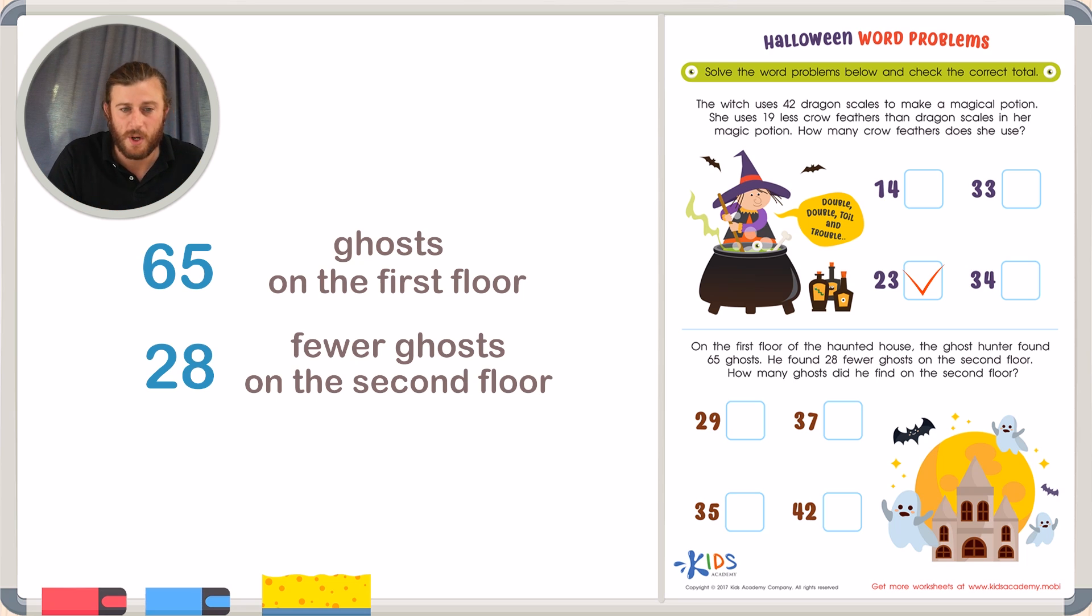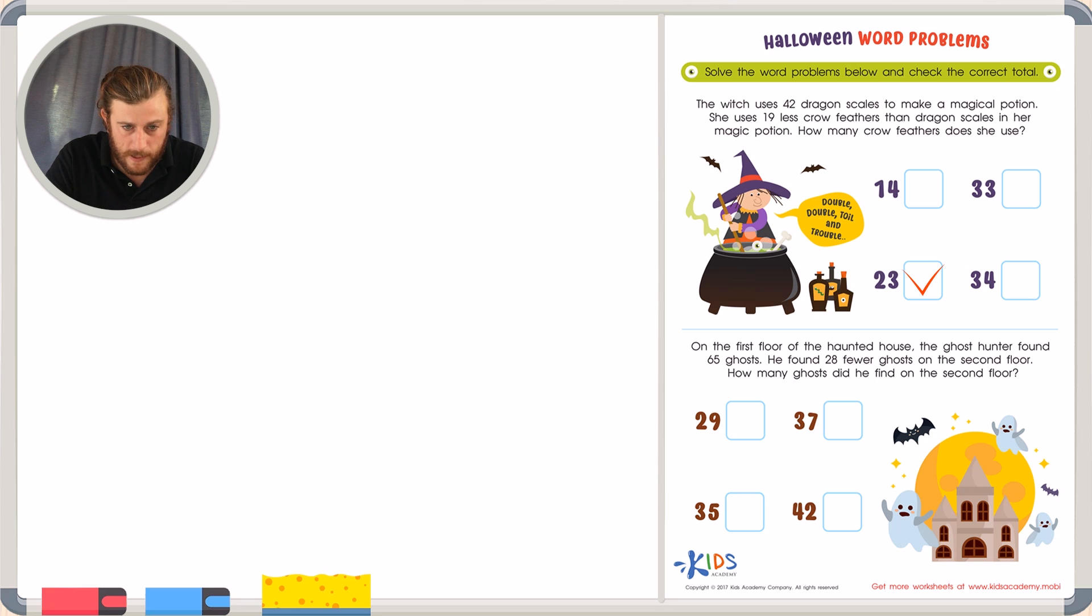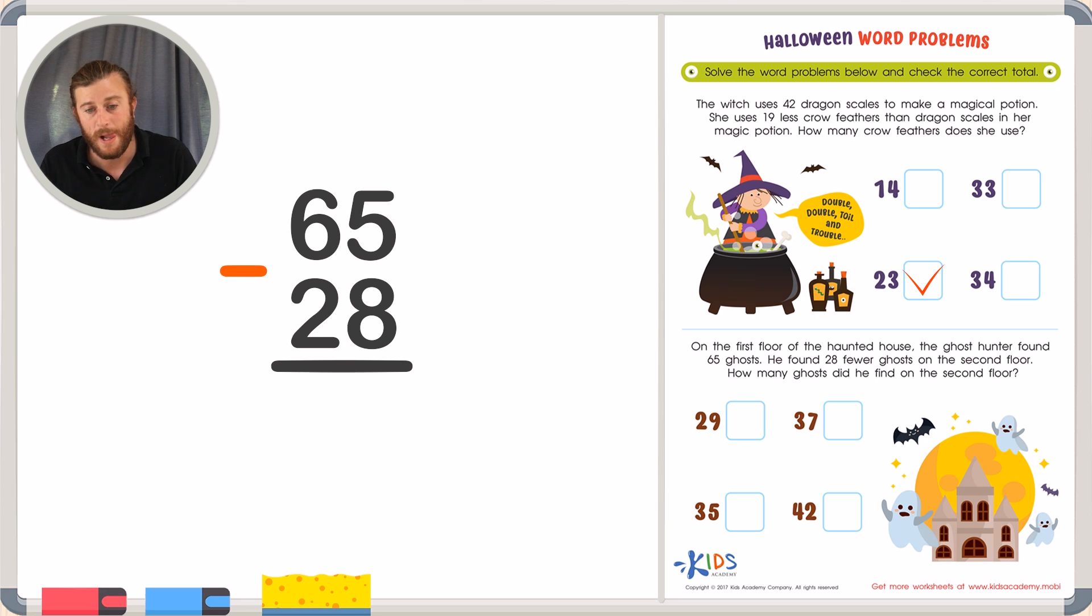We're going to have to subtract 65 minus 28 to find out how many ghosts there were on the second floor. Because there was 28 fewer ghosts or 28 less ghosts on the second floor. So again, let's subtract with regrouping.